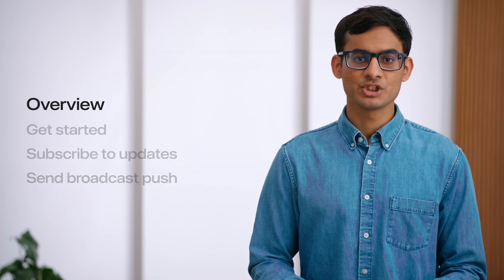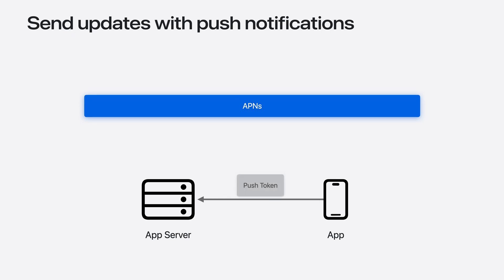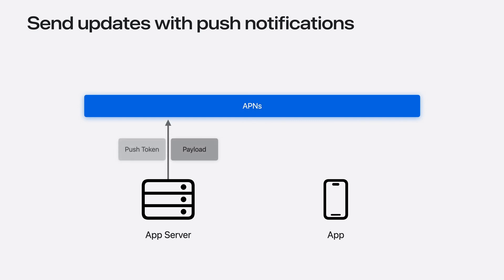Let's start by reviewing how push notifications are used to update a live activity. When a live activity is started, the app requests a push token from ActivityKit. ActivityKit receives this push token from Apple Push Notification Service, or APNS for short, and provides it to the app. This push token is unique for each live activity requested by the app on device. The app then shares this unique push token with its app server. When there is an update, the server sends a push notification to APNS with the token and the payload, and APNS delivers the payload to the respective device. This works great for use cases like tracking deliveries, as each update is unique for every person.